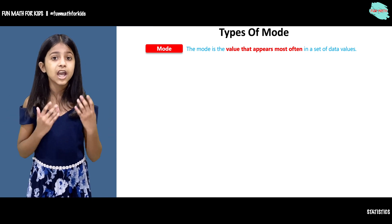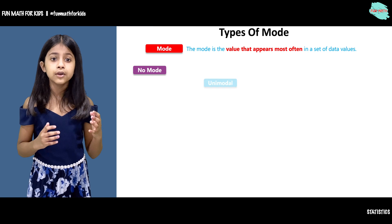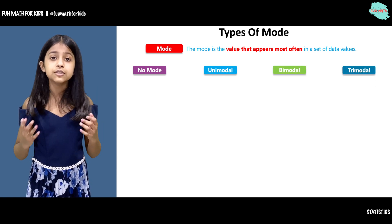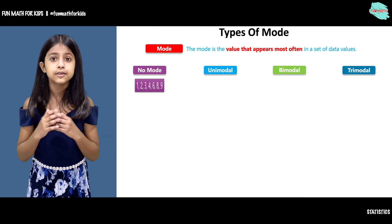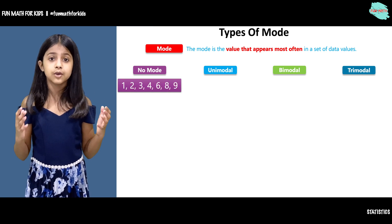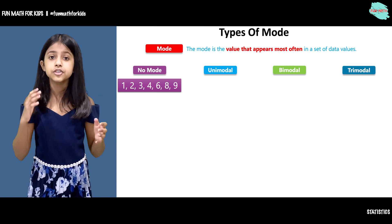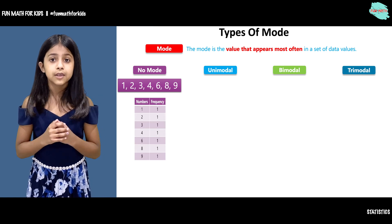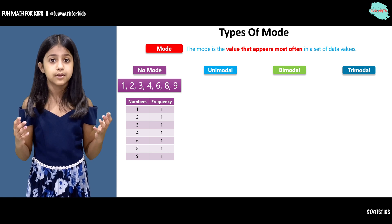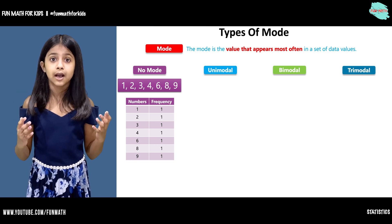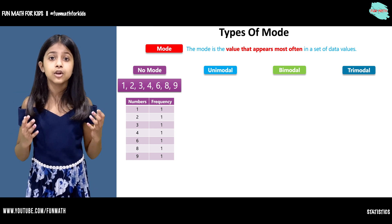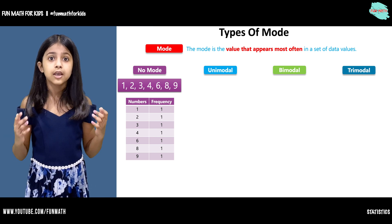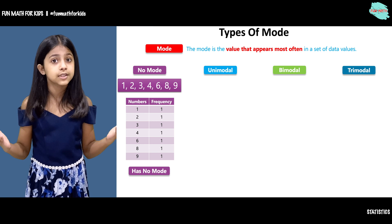There are four types of mode: no mode, unimodal, bimodal, and trimodal. Let's first begin with no mode. Here we have a data set with numbers 1, 2, 3, 4, 6, 8, and 9. Here we have a frequency table. You can see that all the numbers appear only once in this data set. That is why there is no mode in this data set.